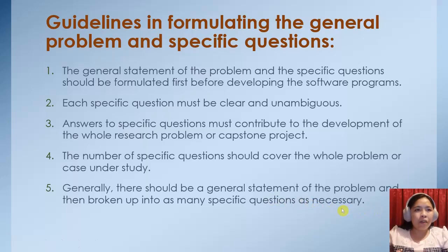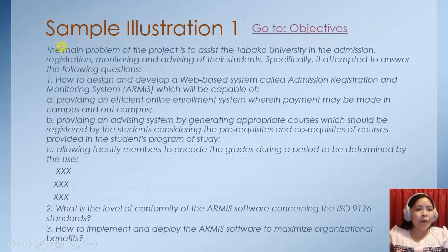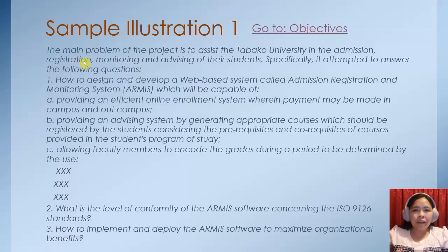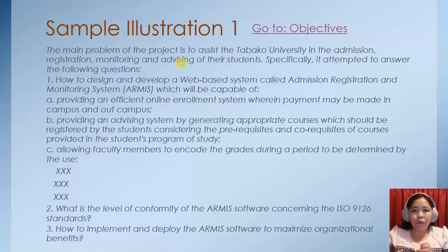So we have here an example. The main problem of the project is to assist the Tabako University in the admission, registration, monitoring, and advising of their students. This is the general statement. As you can see, it is specific. It does not just say 'the system for Tabako University.' It specifies the processes implemented in the system — admission, registration, monitoring, and advising — since they are only focusing on those processes.